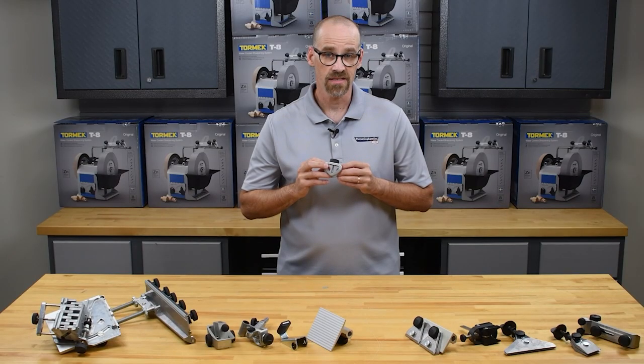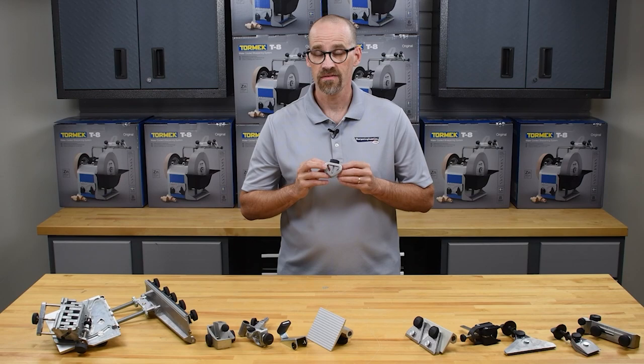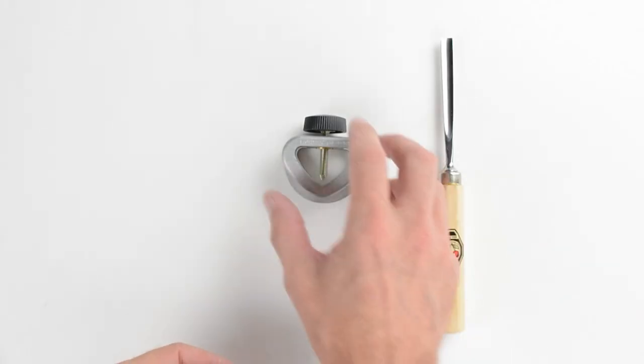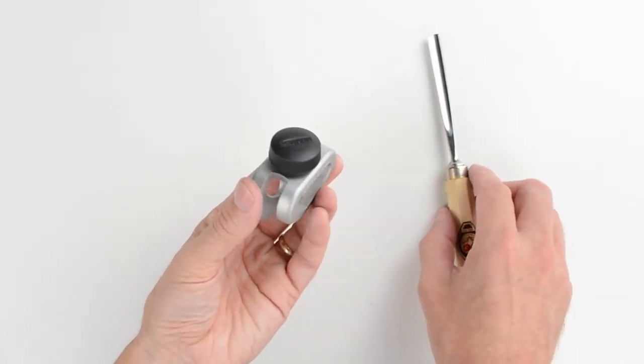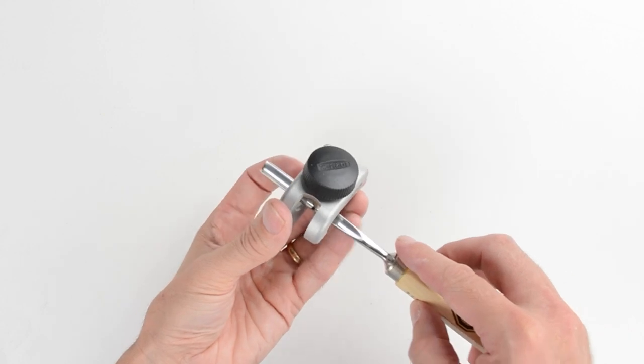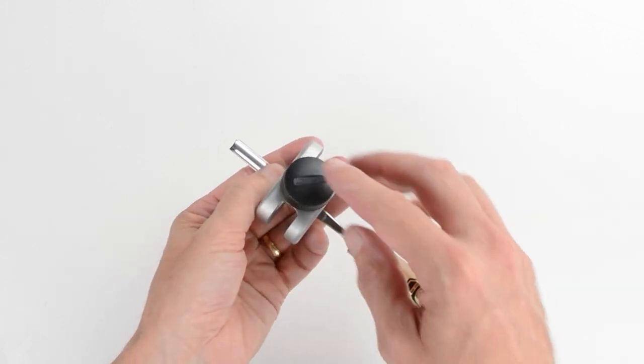The SVS38 short tool jig is for carving gouges and v-tools. Insert the tool into the jig with about one to three inches of blade extending beyond the jig.